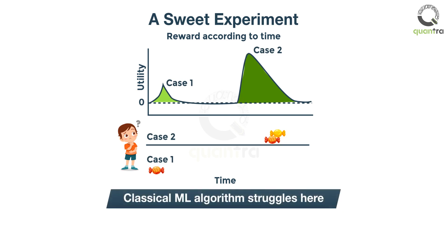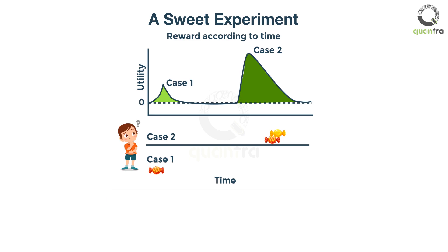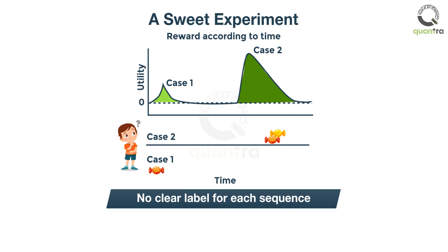We can clearly see that classical machine learning or deep learning algorithms would struggle with the scenarios we have described here, as we cannot ascribe a clear label to each scene — the sequence of decisions determines the final outcome.